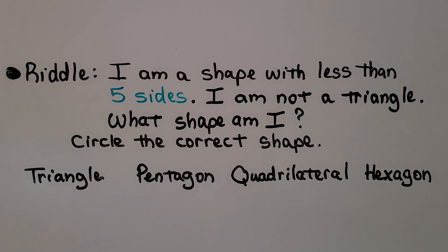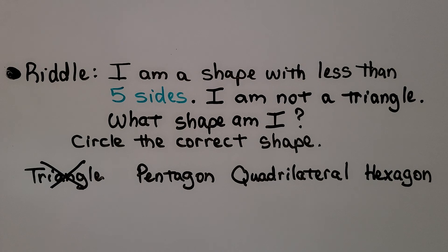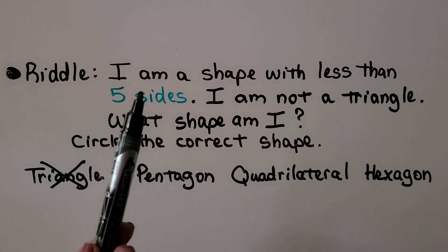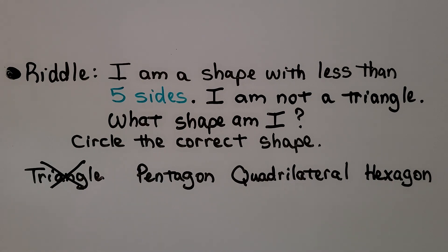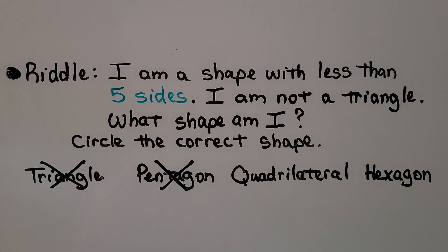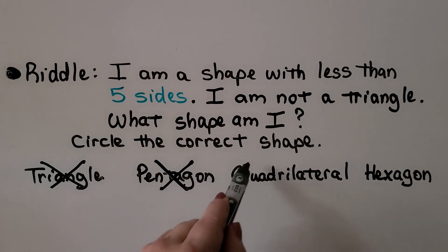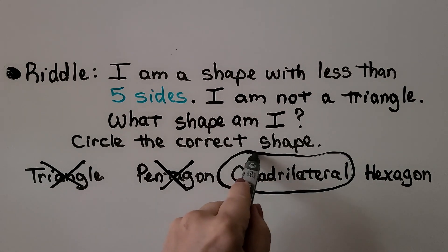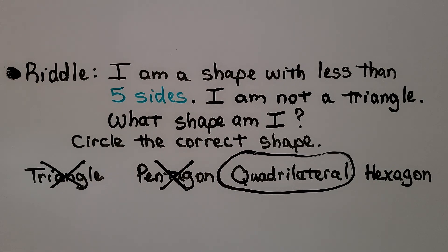Here we have a riddle. It says: I am a shape with less than five sides. I am not a triangle. What shape am I? Circle the correct shape. It says it's not a triangle, so we know it's not a triangle. It says it has less than five sides — a pentagon has five sides, so it's not the pentagon. A quadrilateral has four sides, so a quadrilateral fits. A hexagon has six sides — that's not less than five — so we know the shape is a quadrilateral.